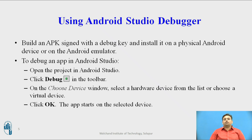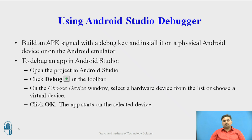Using the Android Studio Debugger, you have to build an APK signed for debug, and then install it on the physical device, or you can use virtual emulators. You have to first open Android Studio — there is a button called Debug — and whenever you click that, it will ask for the device on which it should host the application. You select the particular one and then it gets executed on that device.